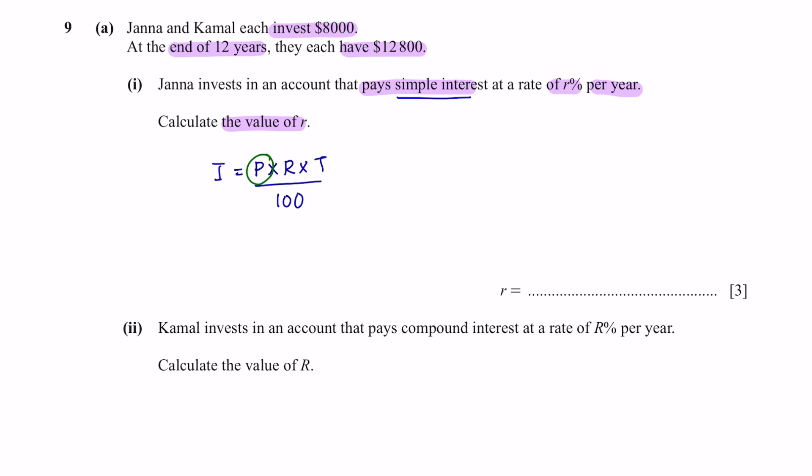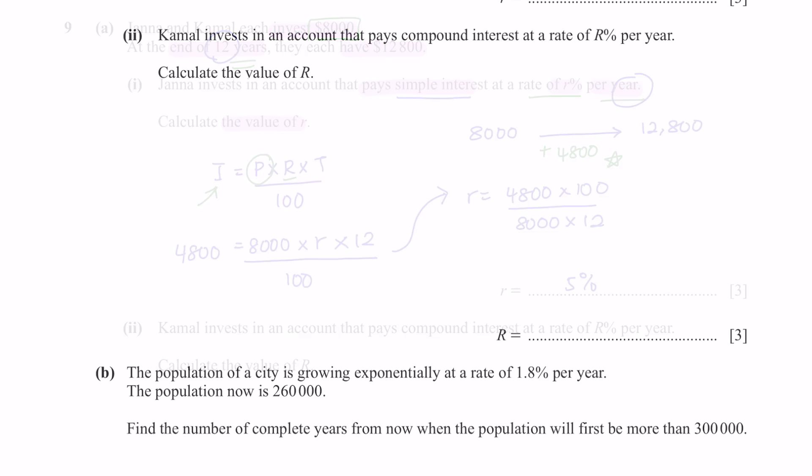P is your initial amount of money, which is $8,000. R is the rate of percent per year, and the number of years here is 12. The interest here is how much money has been gained over the past 12 years. If they each invested $8,000 and at the end they have $12,800, that means they have gained $4,800. So the value for I here would be $4,800. Now we just have to rearrange this to get the value of R, which is 5%.